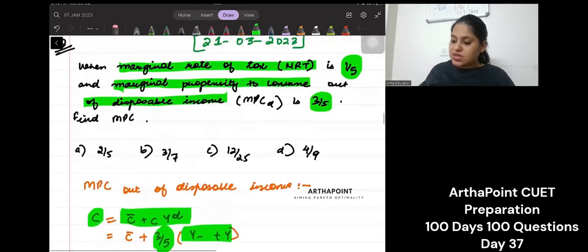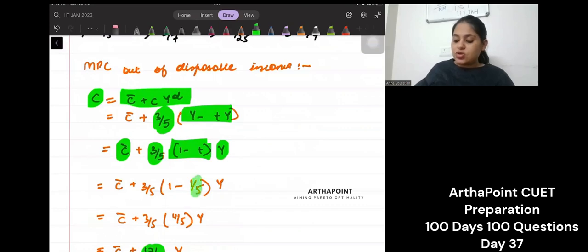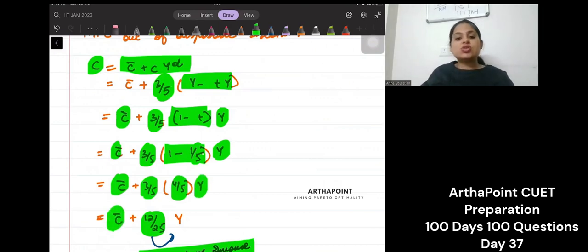And T is given as 1 by 5, so I'll plug in this value. I'll get C bar plus 3 by 5 times (1 minus 1 by 5) into Y. So C bar plus 3 by 5 into 4 by 5 Y, which gives C bar plus 12 by 25 Y.